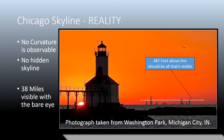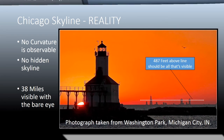If the Earth has a 25,000-mile circumference, then how come those buildings aren't hidden behind the curve? 487 feet above the line should be all that's visible, but in fact you can see much more than that.